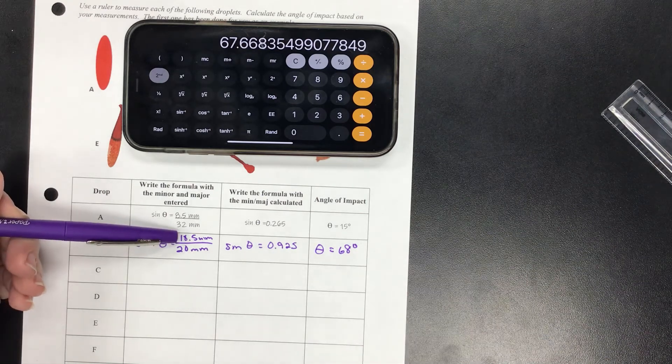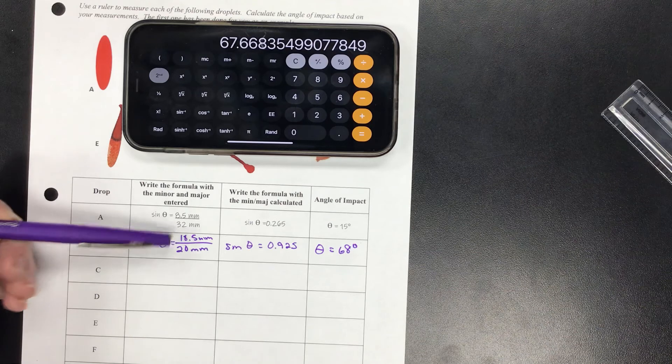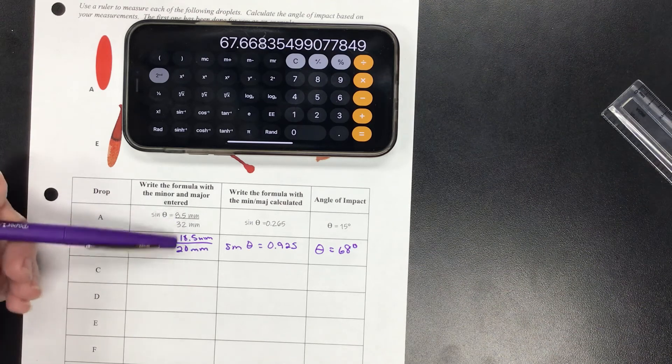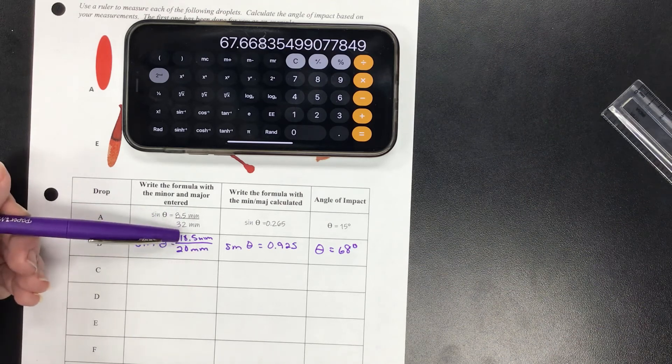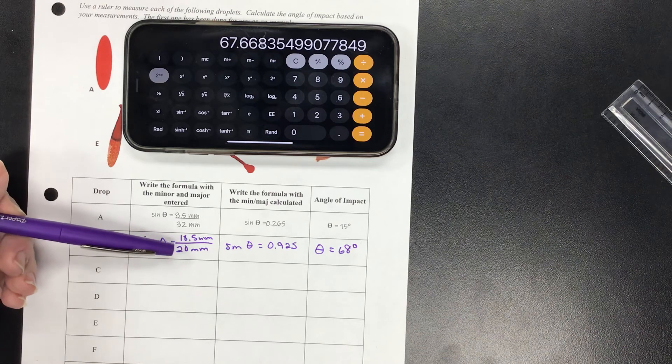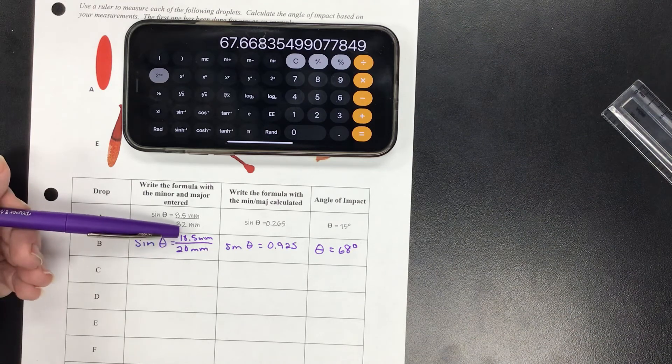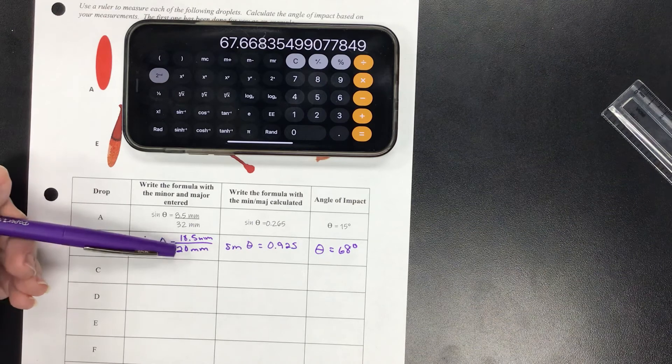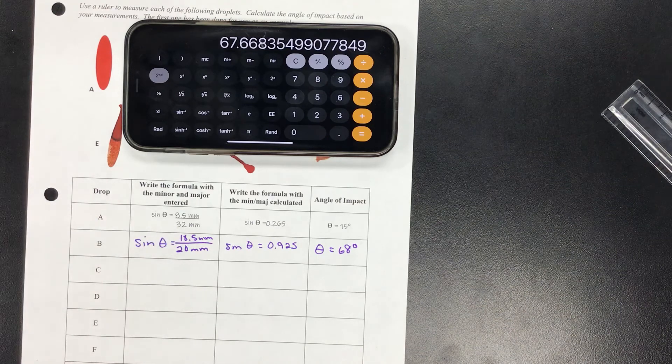If you are off by maybe a millimeter either direction on either number you might get a wildly different angle - that's okay. That's why it's really super important that you show your work. So if you called this 19 and 20 then you're going to get something different, but if I can see that you called this 19 and 20 then that's okay. If you call this 12 and 20 we have a bigger problem and we need to see what's going on with your measuring.